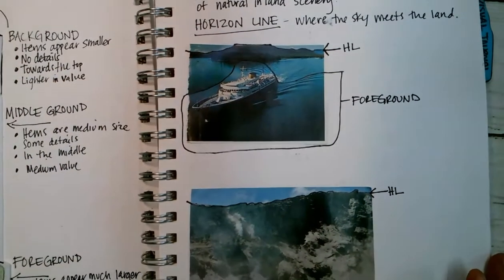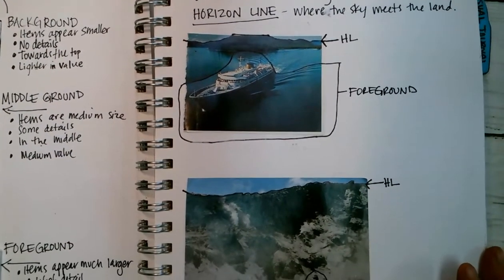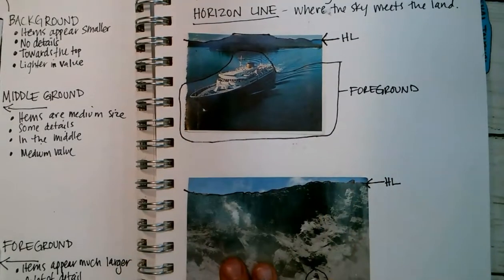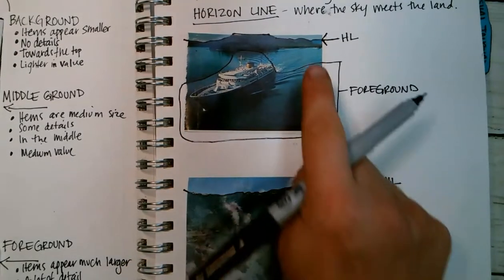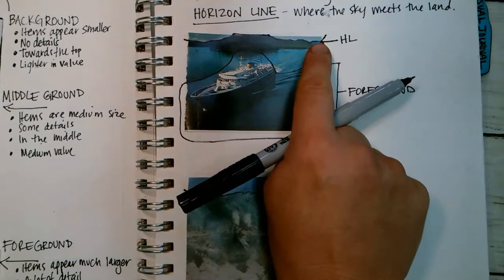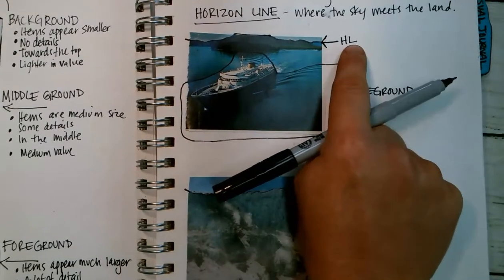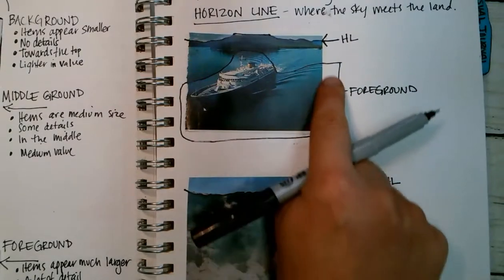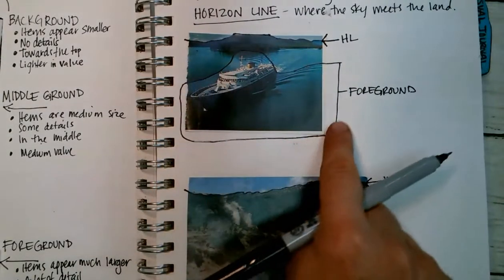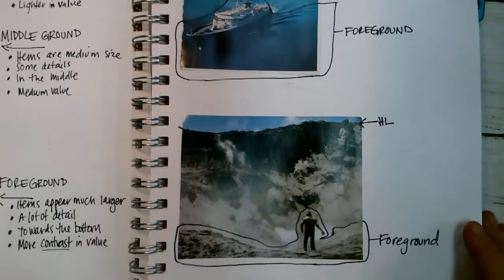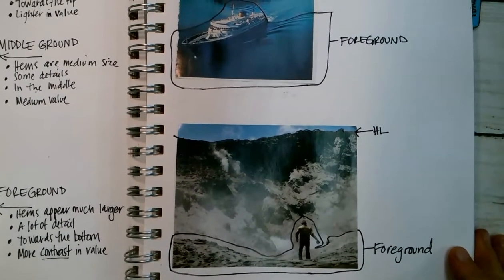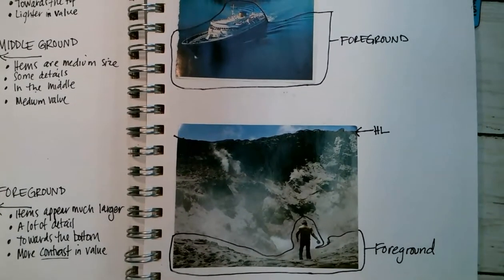So that is what I want you to do: find two images, glue them in, draw an arrow and label the horizon line, draw on the line, then outline everything that's in the foreground and label it as well on both pictures. And that's your homework — we will turn this in on Friday.